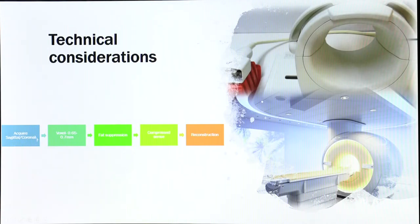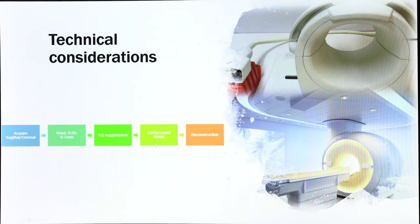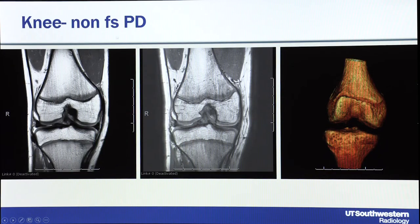For technical considerations: you can acquire sagittal or coronal depending on which plane has fewer slices based on knee shape. Keep a voxel of 0.65 to 0.7 mm to keep scan time below 7 minutes. Fat suppression is ideal because we are looking at fat-suppressed images to differentiate cartilage from fluid and meniscus from other structures — it increases the dynamic range of contrast so tears are most conspicuous on fat-suppressed images. Use compressed sense or at least Caipirinha, and reconstruct in all three planes. TR is about 1100-1200 ms, echo time about 38-45 ms.